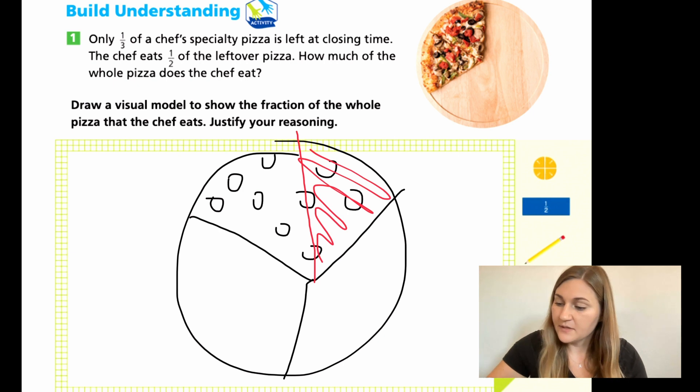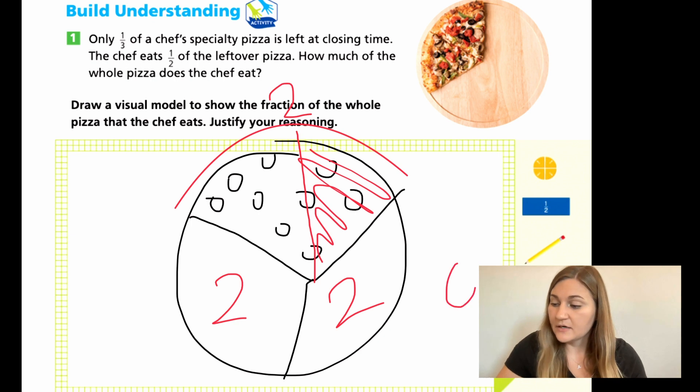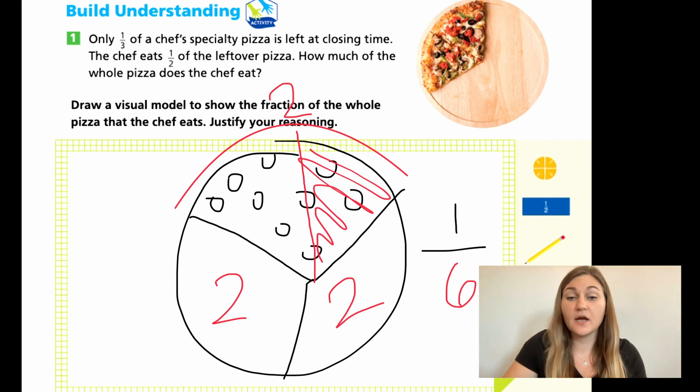So it says how much of the whole pizza does the chef eat? Well, I want to show you that from here to here, there were two pieces. That means that in this section here, there would be two pieces. And in this section here, there would also be two pieces. So if the pieces all match and were equal, the denominator would be six, but the chef only ate one of those possible six pieces if they were all the same.